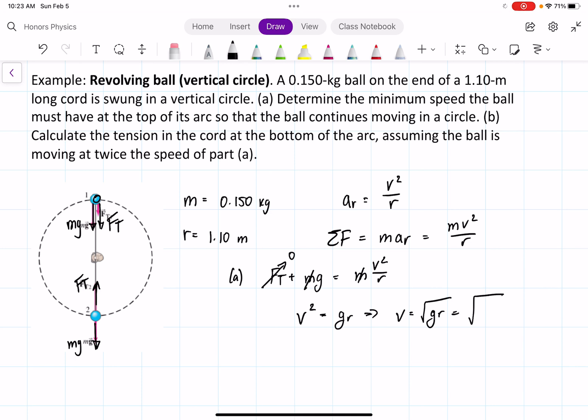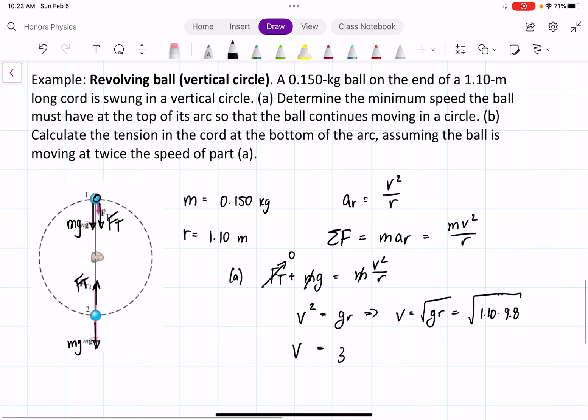And we get, for V, we get 3.28 meters per second.